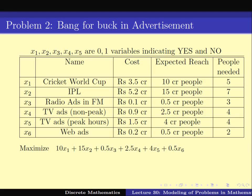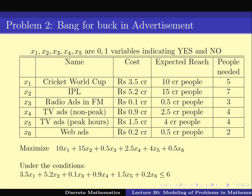We want to maximize the expected reach, which is the sum of each option's reach times its indicator variable. But we have some conditions. If x1 equals 1, I have to spend 3.5 crore; if x2 equals 1, I have to spend 5.2 crore. We must ensure the total amount spent is less than 6 crore, which can be modeled as 3.5 times x1 plus 5.2 times x2 and so on being less than 6. Similarly, the number of people used can be modeled with a corresponding constraint. This is very much an integer programming problem — maximize a linear objective under a set of linear constraints.